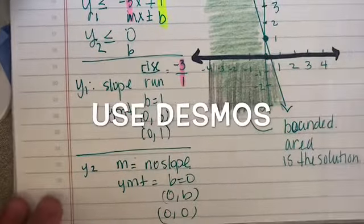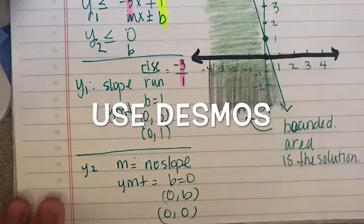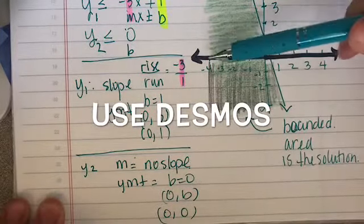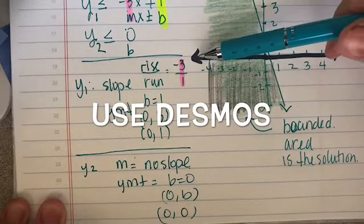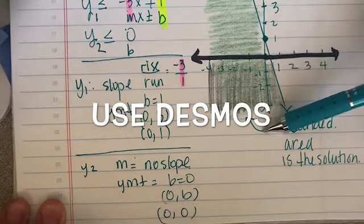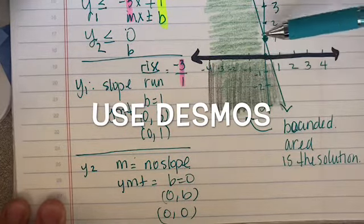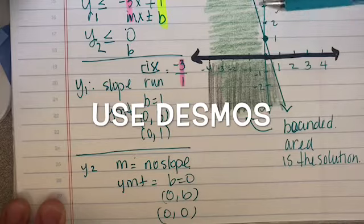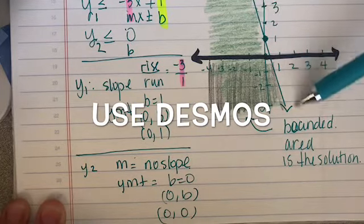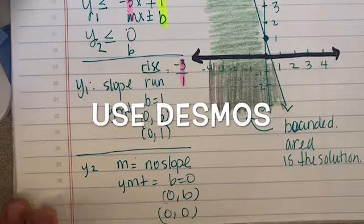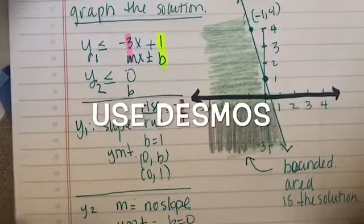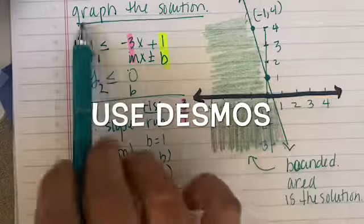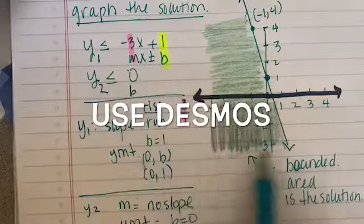So right in there — that bounded area is the solution. The instructions were to graph the solution for this system of inequalities.